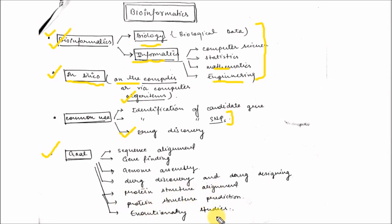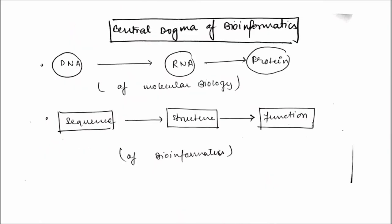So these are the goals of bioinformatics. What is the central dogma of bioinformatics? As you know the central dogma of molecular biology is DNA to RNA and RNA to protein with the help of translational phenomena, DNA to RNA with the help of transcription phenomena.